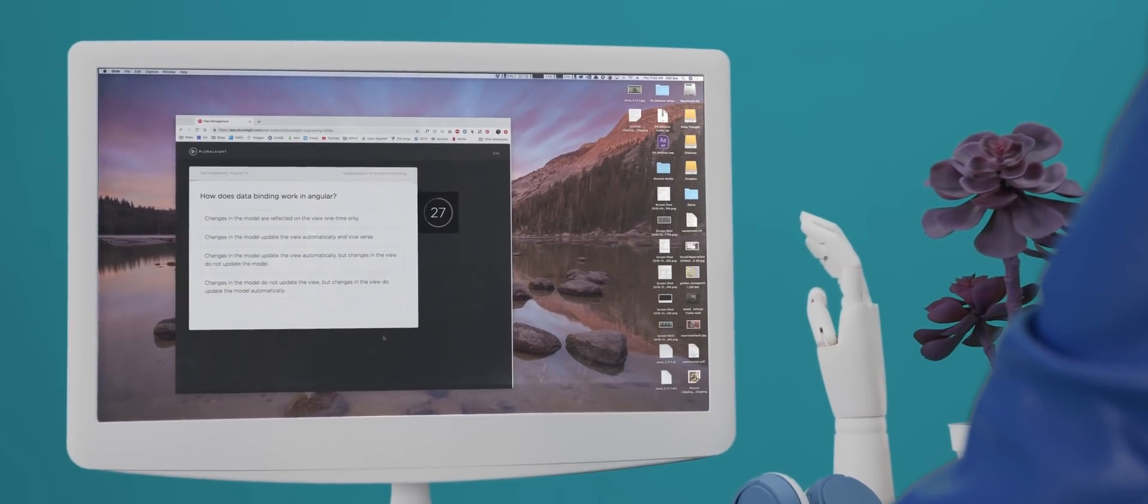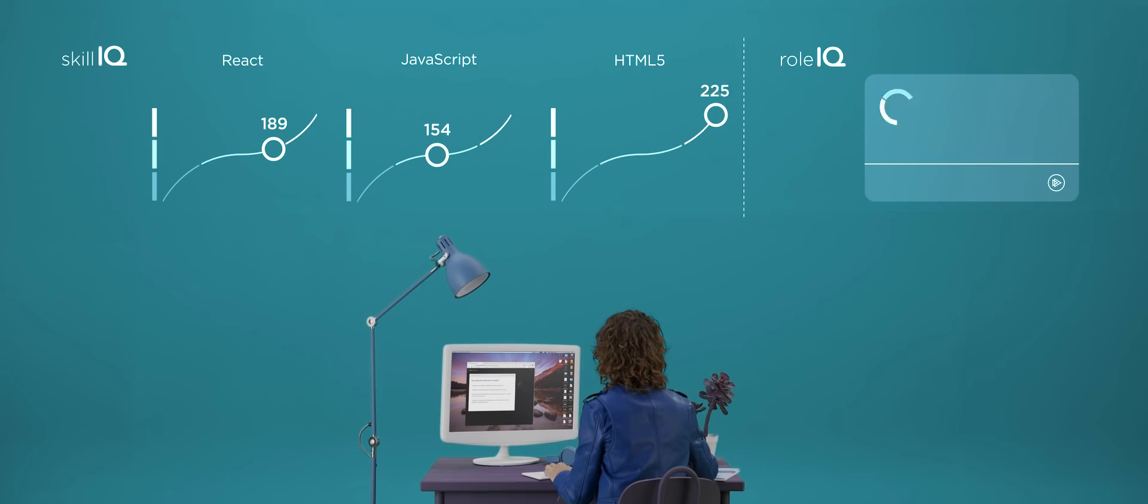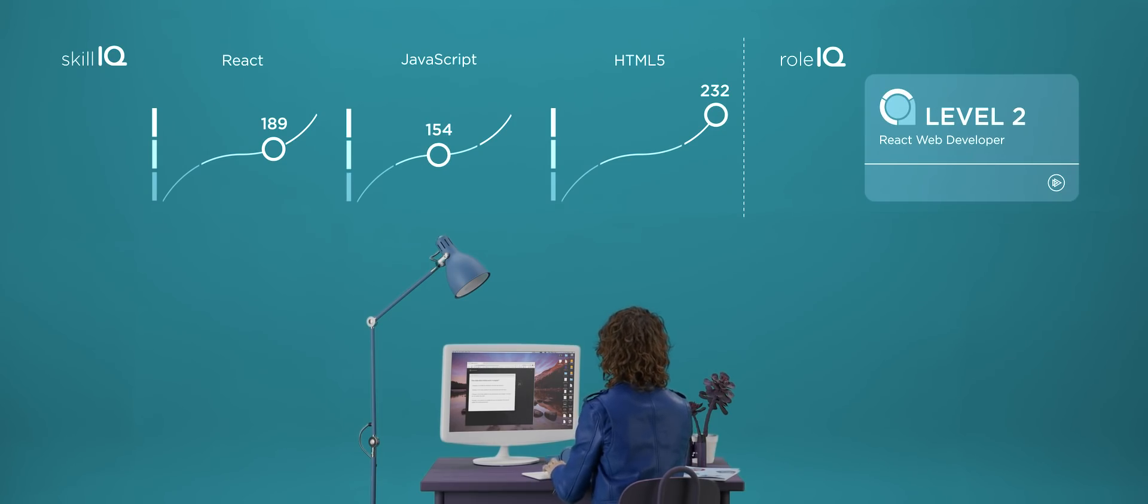She uses Pluralsight's skill assessments to see how her skills stack up. A few assessments later, Jen gets her role IQ and now knows what skills she needs to tackle the job.